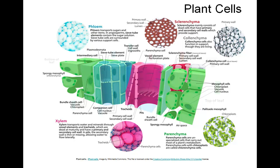Sclerenchyma cells mainly consist of dead cells that have both primary and secondary cell walls which provide support. These cells are dead at maturity.